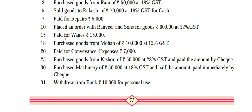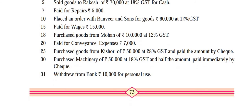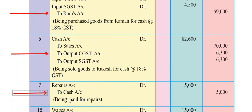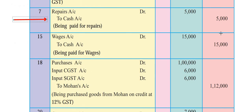The next entry dated 15th: paid for wages. Since wages are paid, wages account will be debited and cash account credited. Journal entry: wages account debit Rs. 15,000, to cash account credit Rs. 15,000. Narration: being paid for wages. This entry is also a simple one.